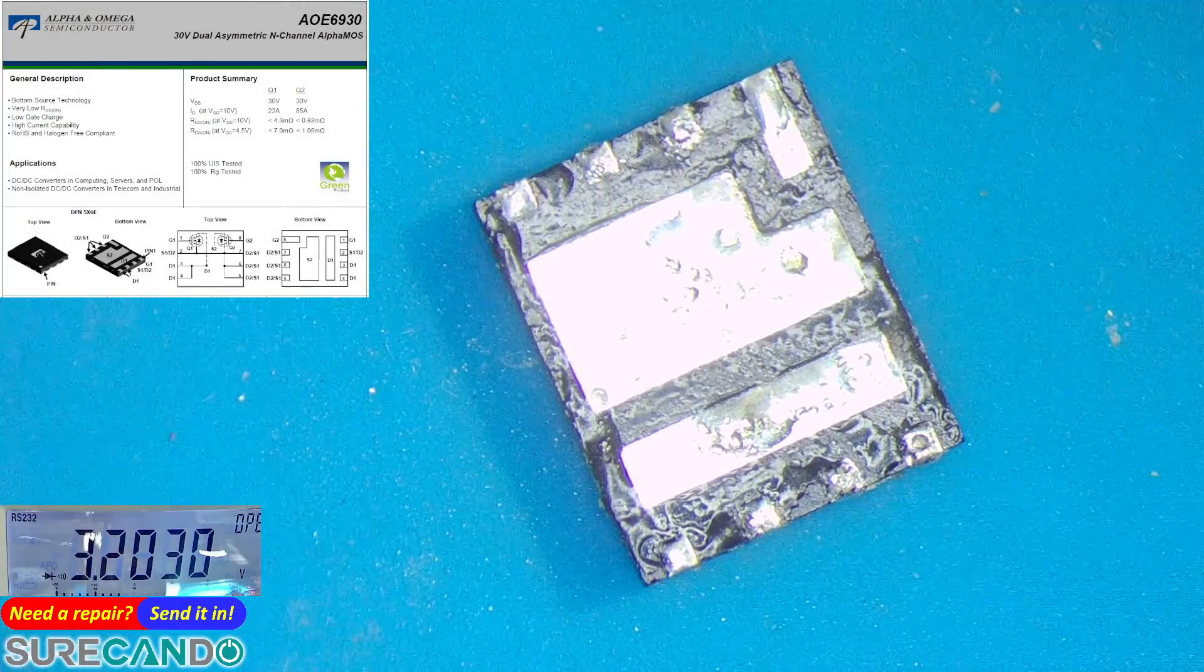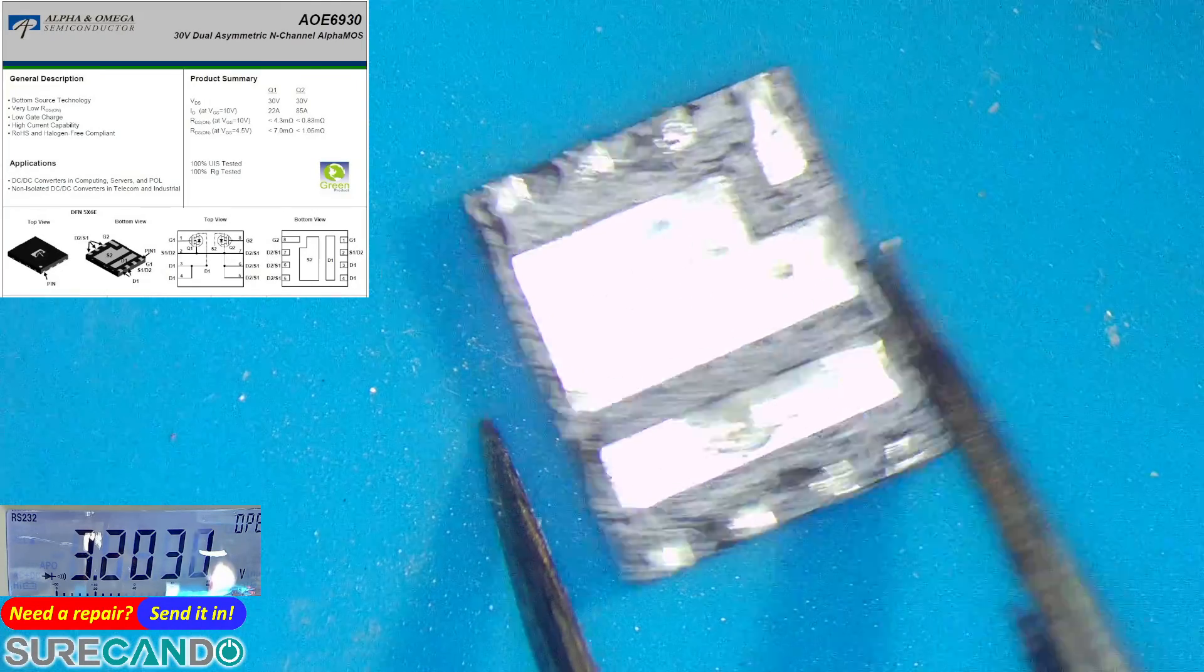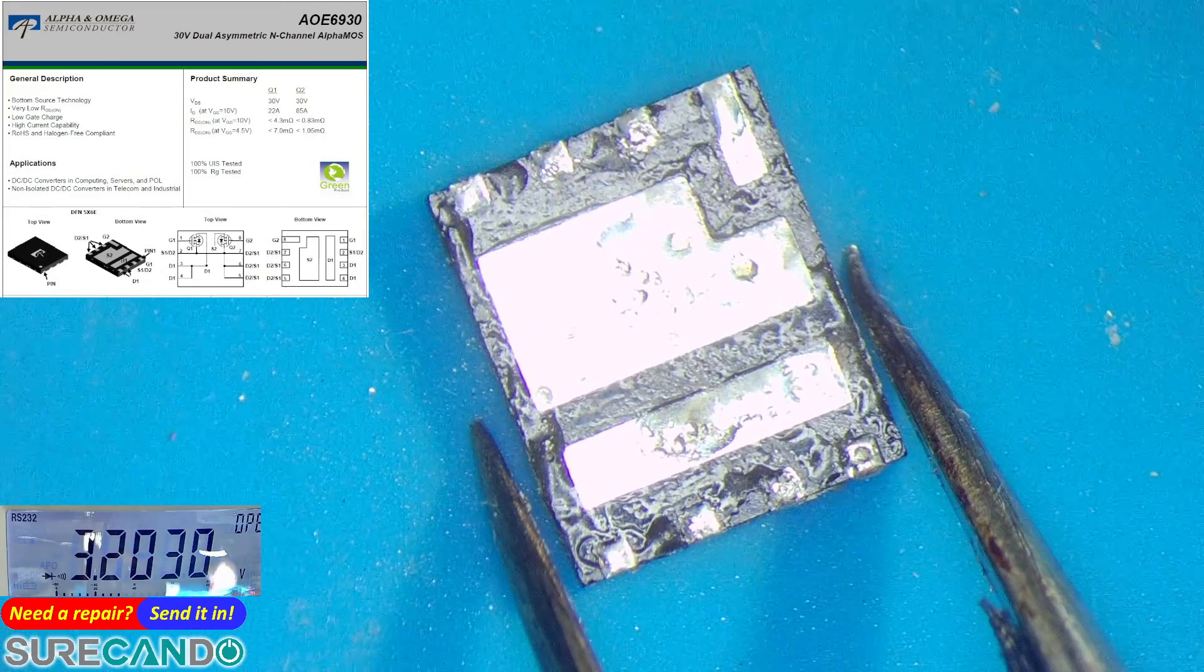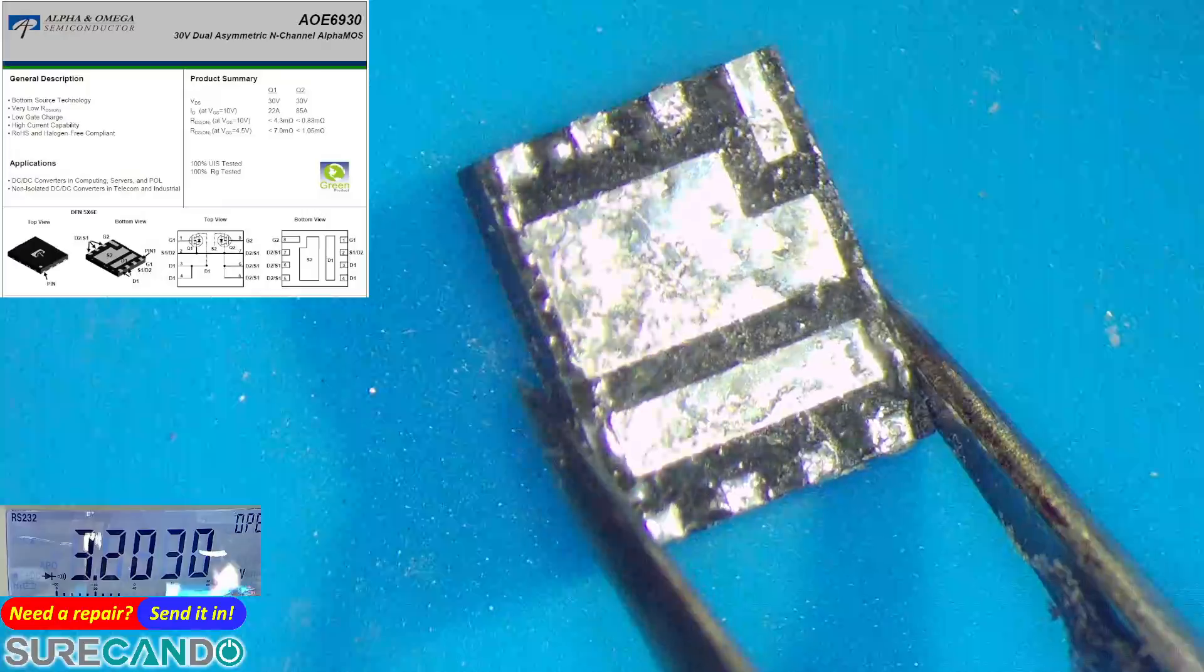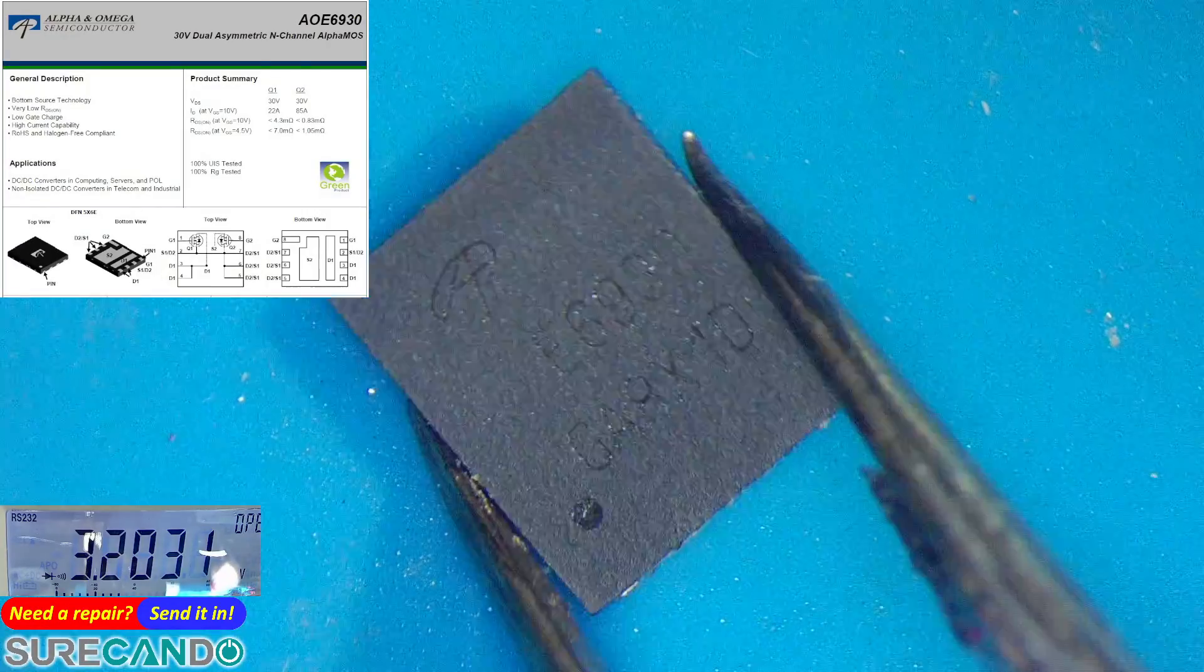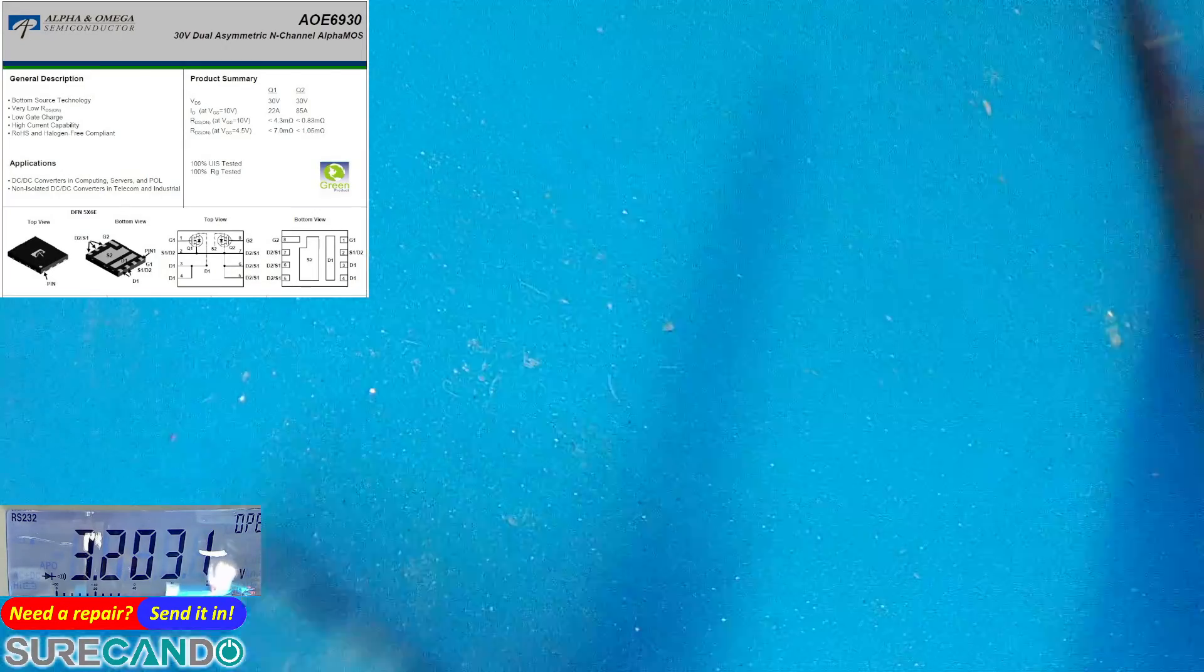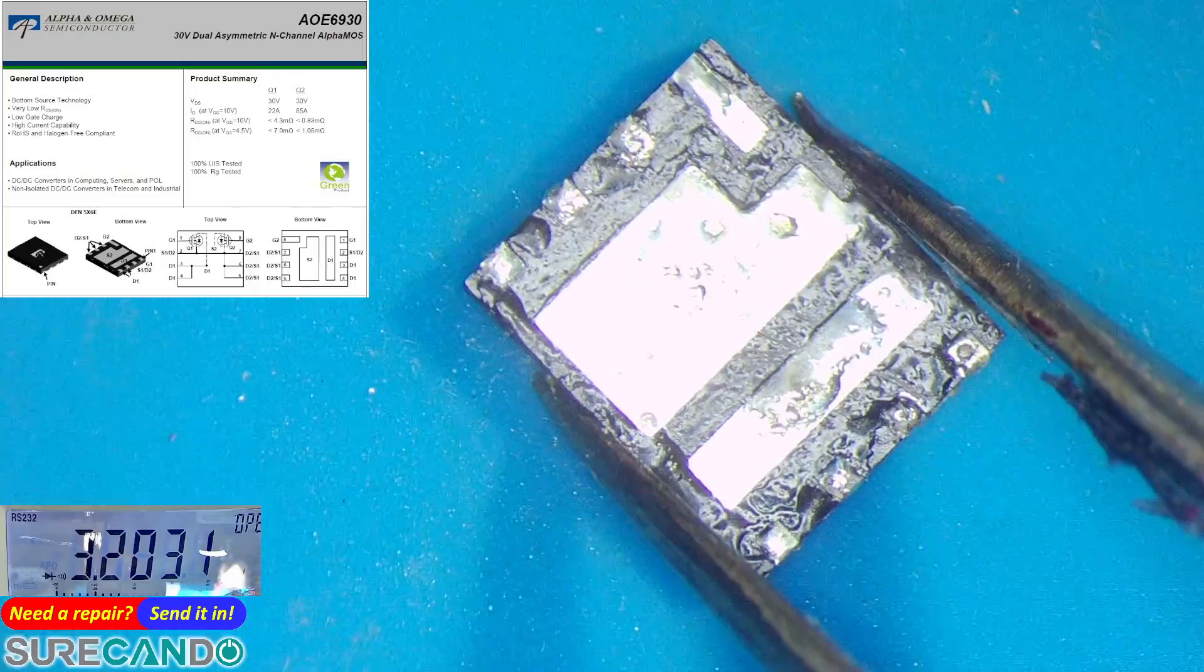We're going to use a multimeter to test a dual channel dual n-channel MOSFET. On the left you can see the schematics or datasheet for this MOSFET. This is a working one pulled out of another working laptop, the E6930. Pay attention to the datasheet as this one is silicon-based diode.